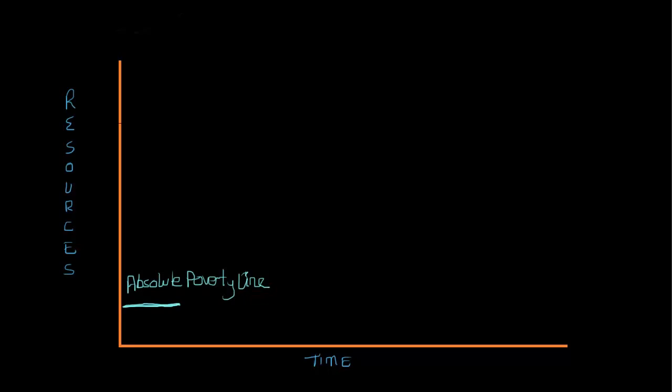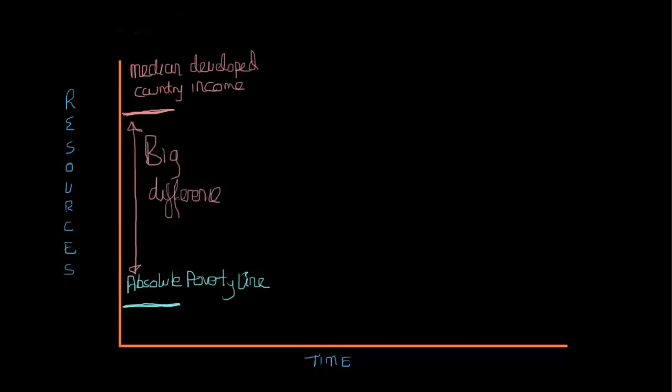So it could actually be much higher on this level. So the resource level of those individuals is actually much higher than this absolute poverty line. So does that mean that we don't have any people living in poverty in the United States?